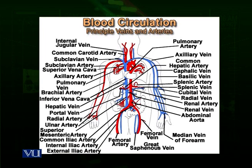Then the dorsal aorta continues down and divides into two major vessels called the iliacs. The iliac arteries supply blood towards the legs and further continue down as the femoral arteries, which give blood to the lower parts of the leg — the calf and the foot.